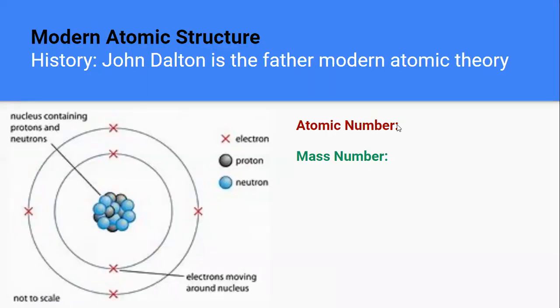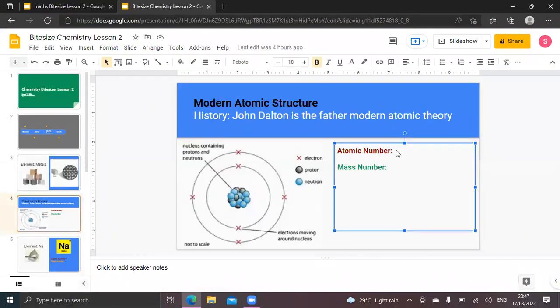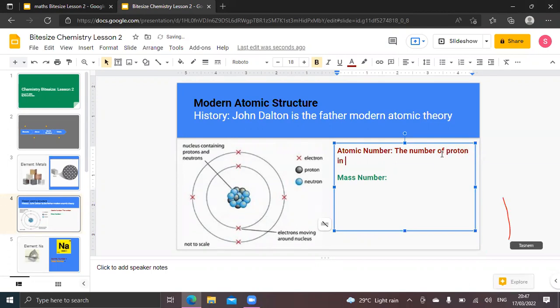So what is actually atomic number? Let's stop presenting here. Atomic number is, if you can write it down, the number of protons. We have to remember this and memorize this: number of protons in the nucleus. Please do not write on my screen. In the nucleus of an atom. So atomic number is the number of protons in the nucleus of an atom.